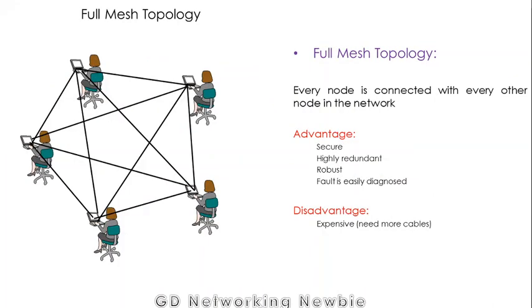Next is mesh topology. In mesh topology, every node in the network is connected with every other node. Each node has a responsibility to be connected with all other nodes in the network. The advantage of mesh topology is that it is secure — if one user wants to send data to another, there is a dedicated connection between them and only that node receives the data; the rest do not.